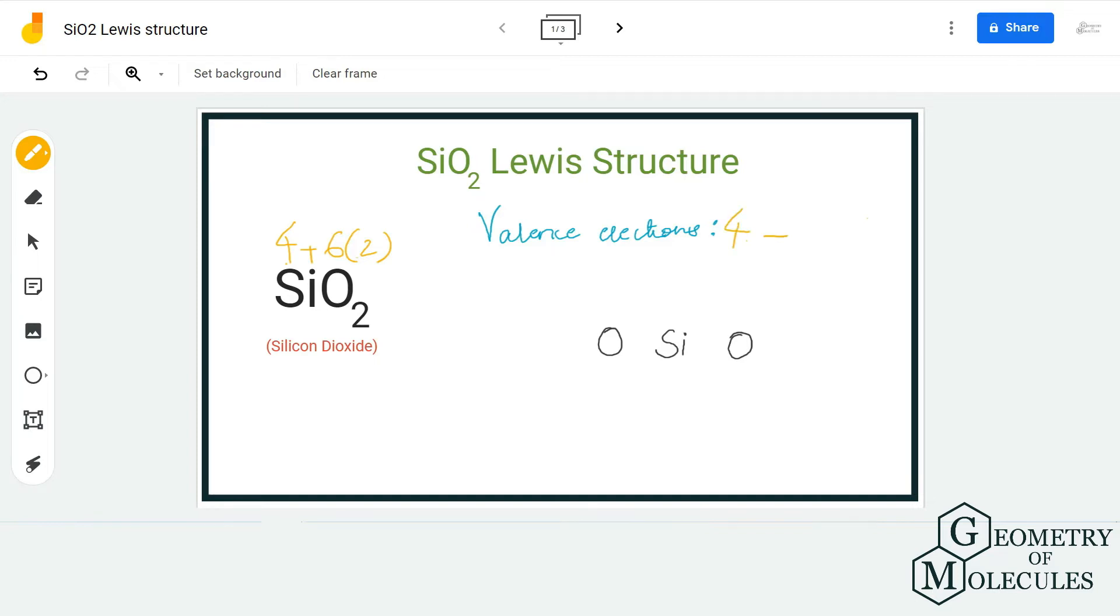in its outer shell. So 12 plus 4, we have 16 valence electrons for this molecule. Once you have found out the number of valence electrons, you can start placing the atoms and forming bonds. Silicon will be placed in the center and oxygen atoms will be placed around it like this.